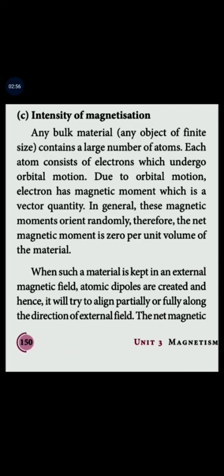The intensity of magnetization: if we have a material, there are electrons in it. Atoms and electrons are in orbital motion. In the orbital motion, the magnetic moment is changed, and the orbital motion produces a magnetic moment, which is a vector quantity.